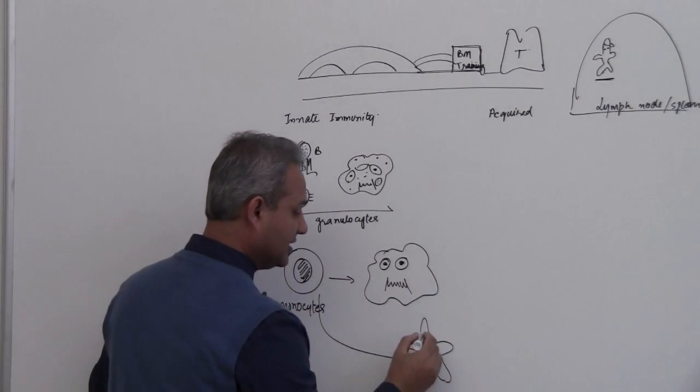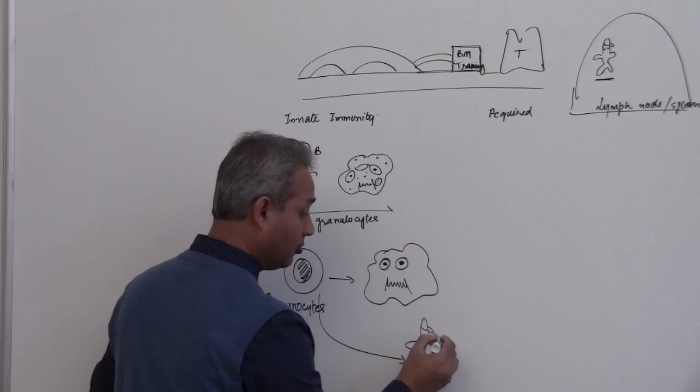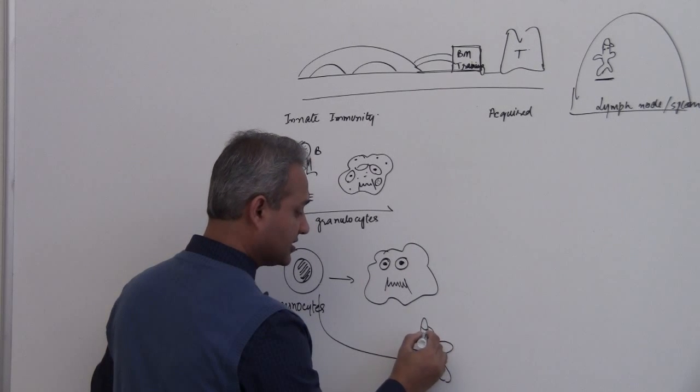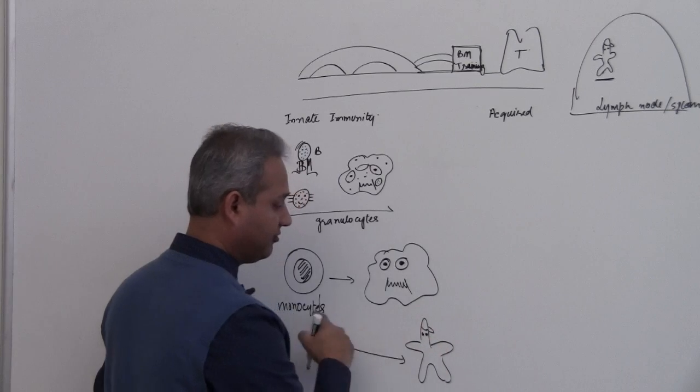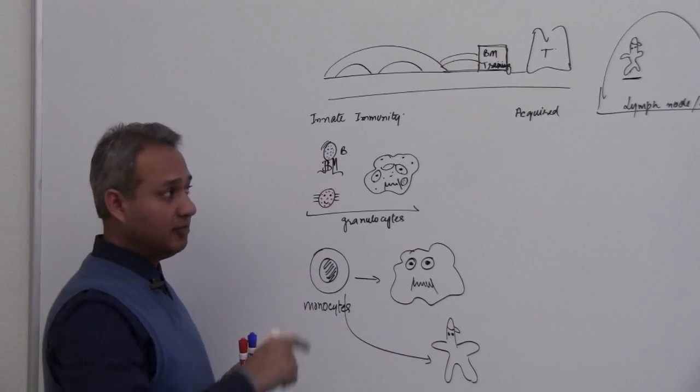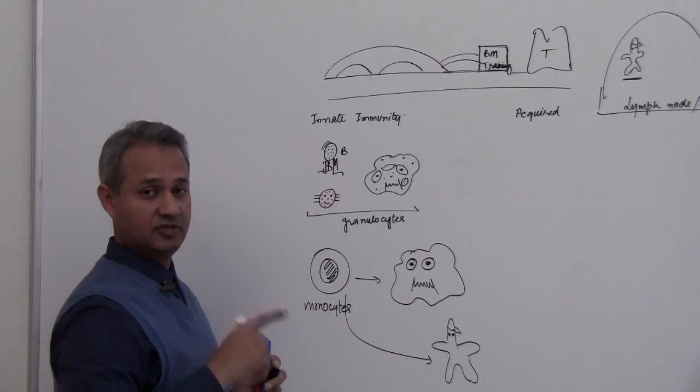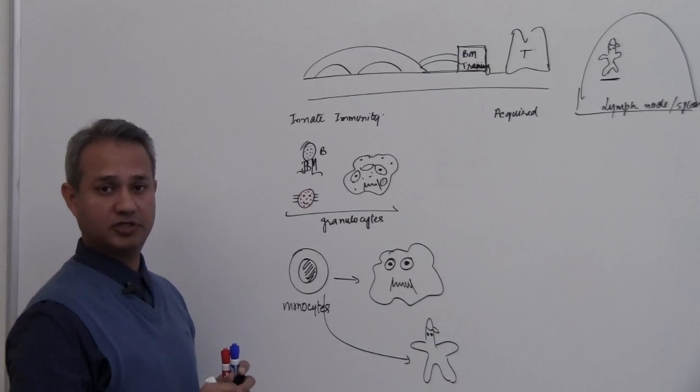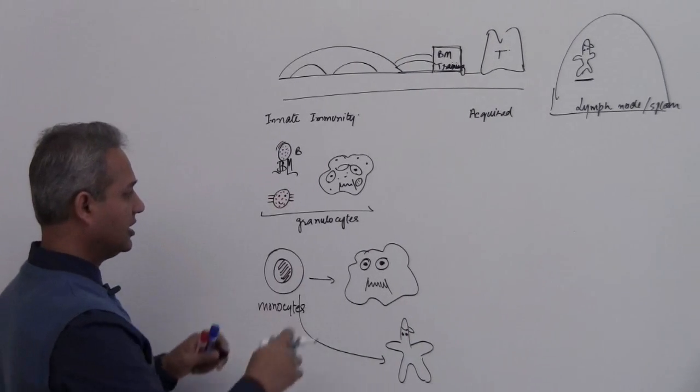Follicular dendritic cells are originated from lymphoid tissue instead of the monocytes. So we do have dendritic cells in the tissue, normal tissue, and these dendritic cells are actually a derivative of monocyte, but those follicular dendritic cells are actually derivative of the lymphoid tissue. So we will talk about that today.